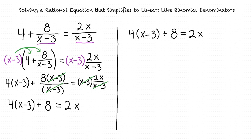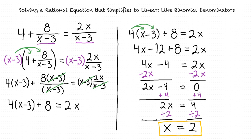To eliminate the parentheses, we'll use distribution again. Our equation can now be rewritten as 4x minus 12 plus 8 equals 2x. We solve for x using the following steps and find that x equals 2.